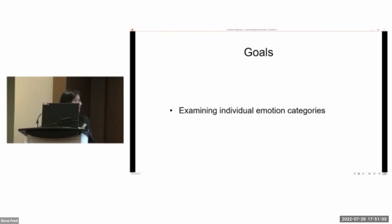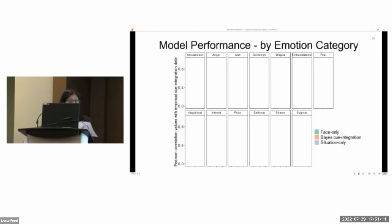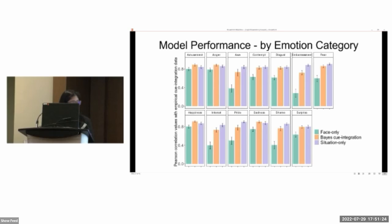Moving on, we next examined the variation in the model fit across the different emotion categories, and we performed pairwise comparisons of the bootstrap confidence intervals for the difference in correlation values of the three models across the 13 different emotion categories.